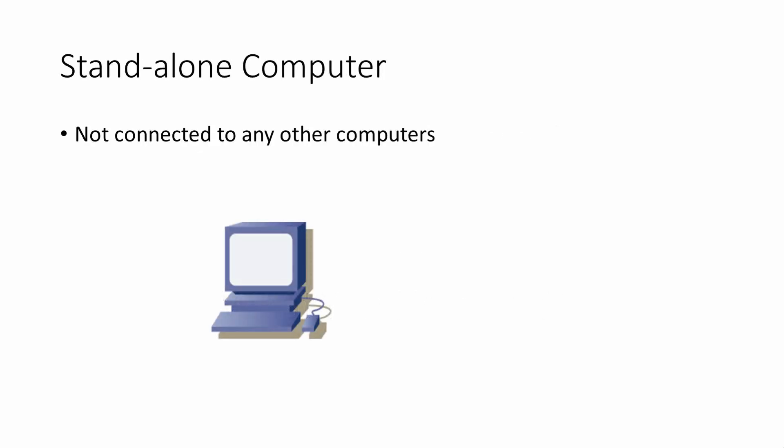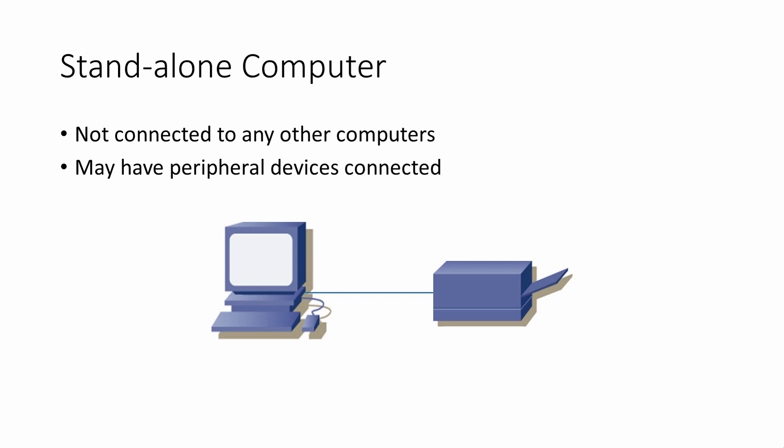Before we consider what a computer network is, let's quickly say what it isn't — a standalone computer. A standalone computer is one which isn't connected to any other computers. It might have peripheral devices attached, such as a printer, but it can't communicate with any other computers.